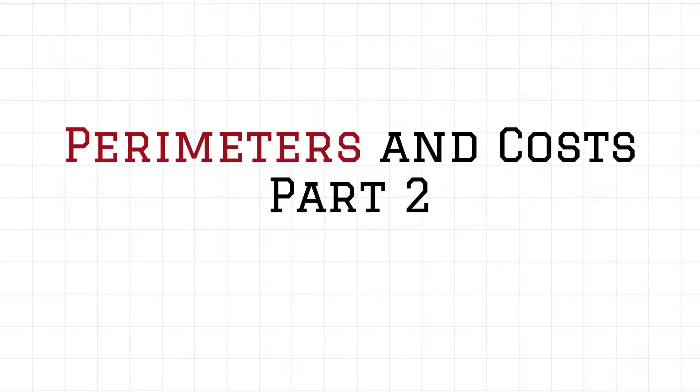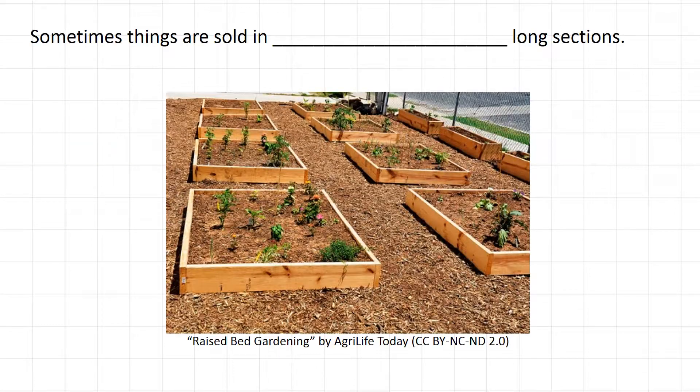Let's see one other way in which perimeters and costs can be a little different. An important part of calculating costs or estimating costs is that sometimes things are sold in multiple feet long sections.